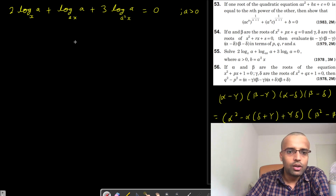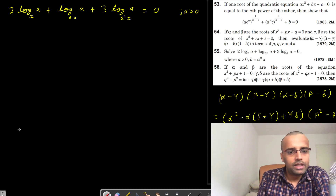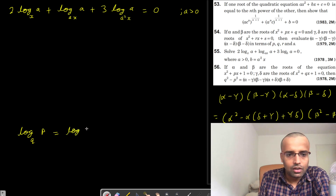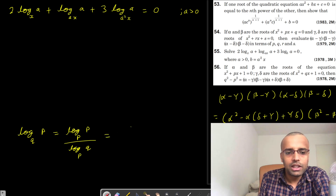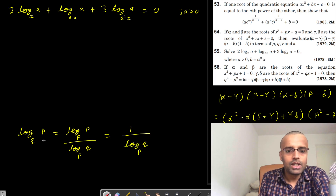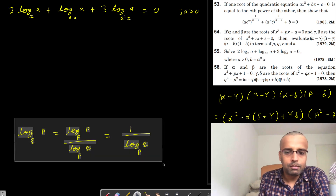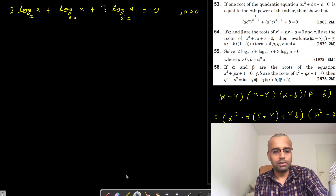So what is a property of log? If I have something like log of p to the base q, then what can I write? Log of p to the base p divided by log of q to the base p — so this will be 1 over log of q to the base p. That is, log of p to the base q equals 1 over log of q to the base p. This is the property we can use here.